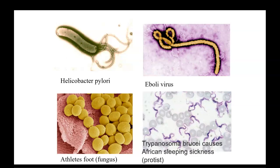Over on the right-hand bottom corner, you see trypanosoma — that's going to be a type of protist. This protist causes African sleeping sickness, but there's a whole range of other types of protists that can infect the body, such as tapeworms or giardia, found in water or food that people consume. So the different types of microorganisms that can infect the body include bacteria, viruses, fungi, and protists.